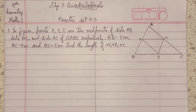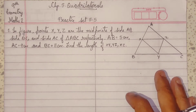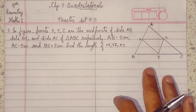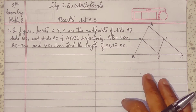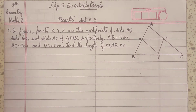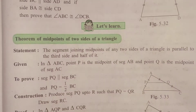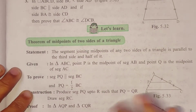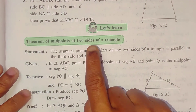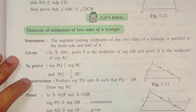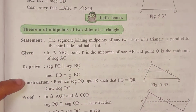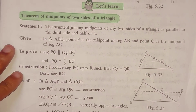Standard 9th geometry part 2, practice set 5.5 on quadrilaterals. This practice set is based on the midpoint of two sides of a triangle.